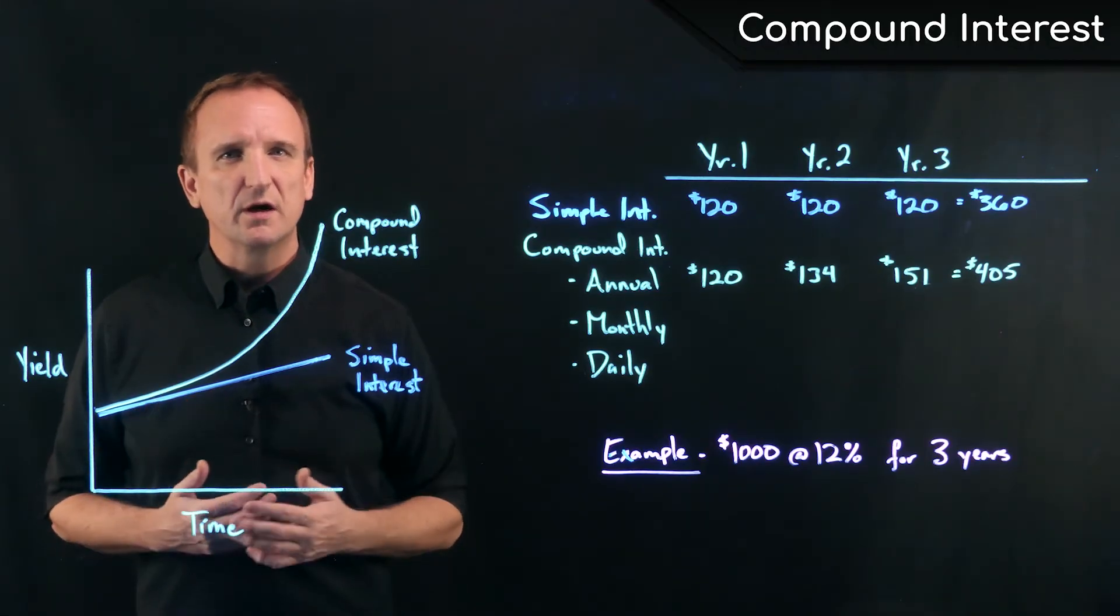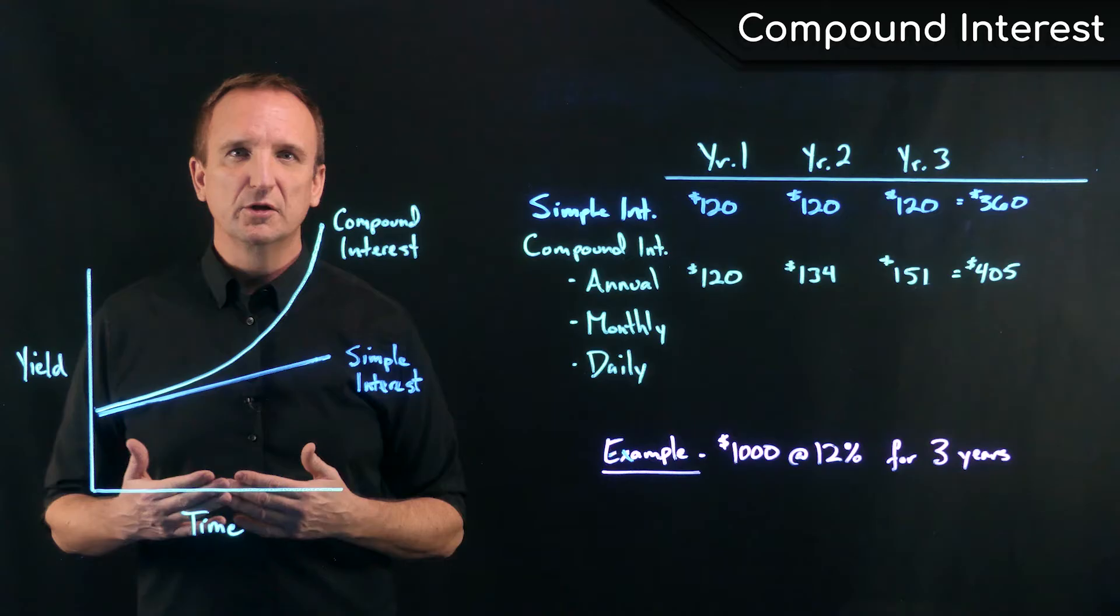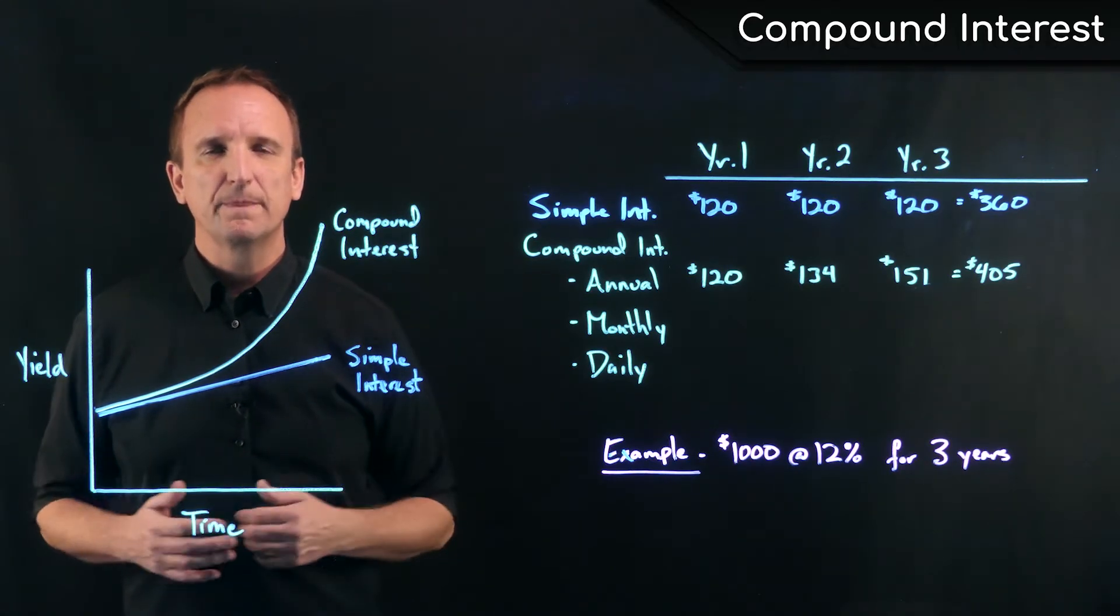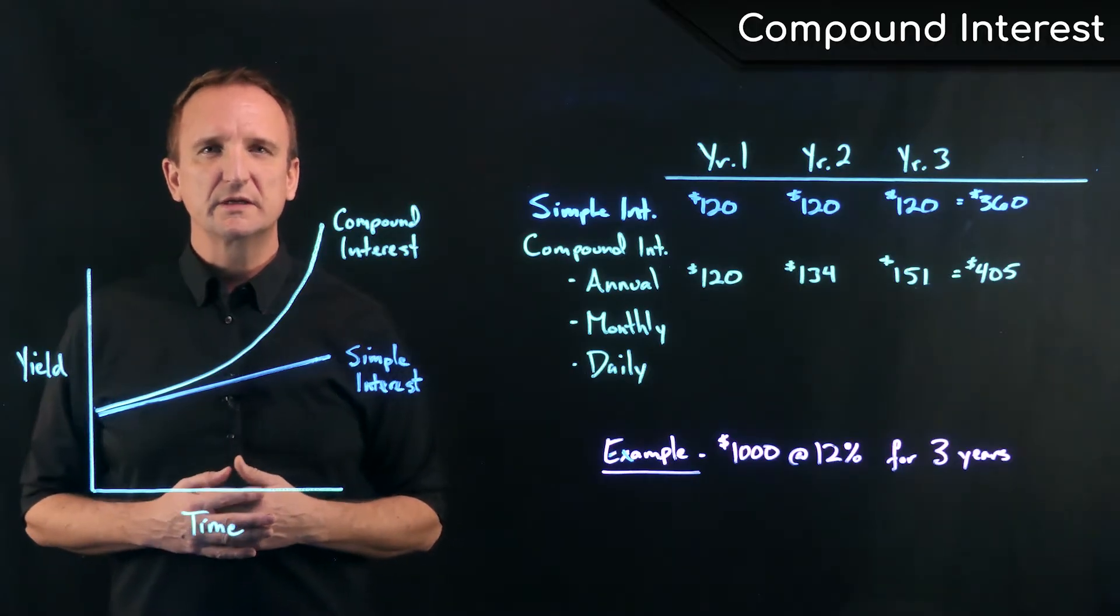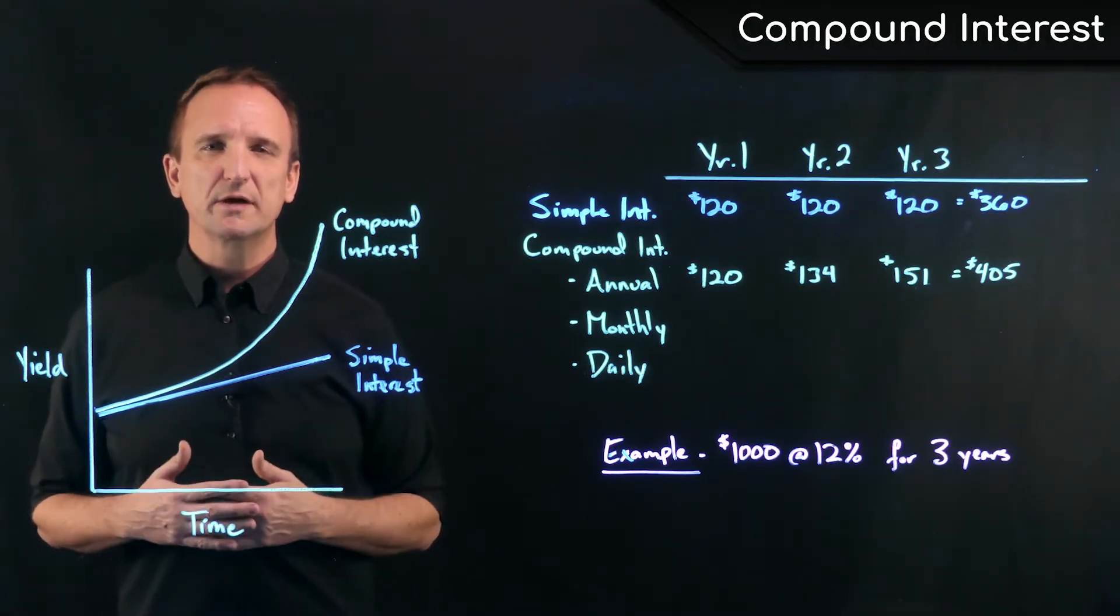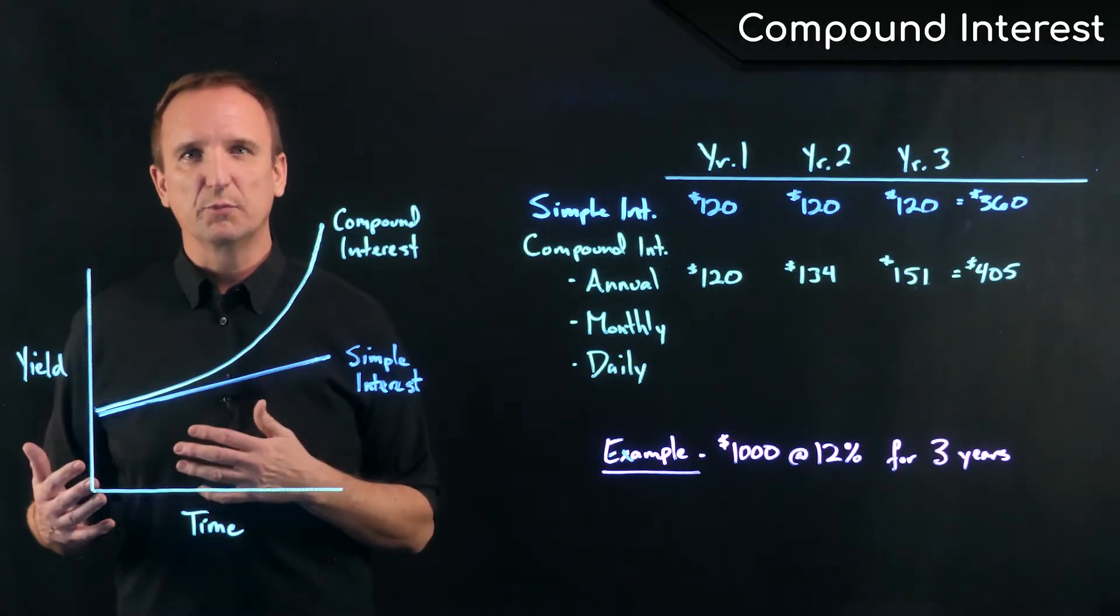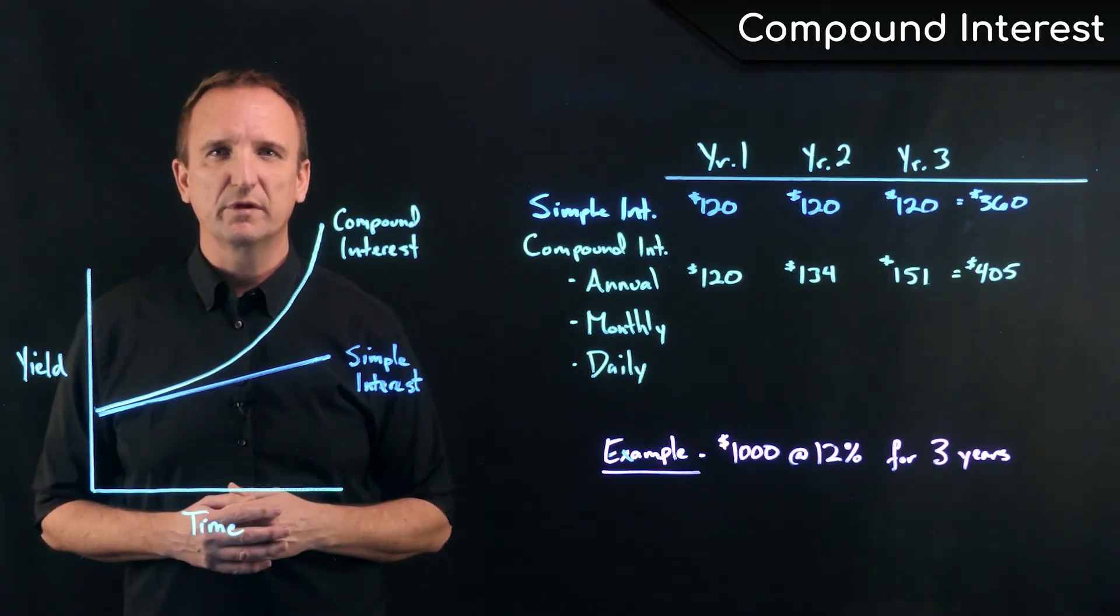But there's another concept that goes a little bit deeper with compound interest, which is the compound interval. Compound interval states how many times per year we get paid interest on both the principal and our previous interest.